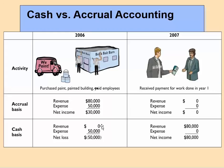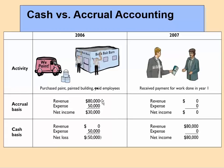Under cash basis accounting, we wouldn't recognize the revenue until we actually got paid, but we would have paid all expenses in 2006 — resulting in a net loss of $50,000 in 2006. Then in 2007, we'd show $80,000 of revenue with no associated expenses. Anyone reviewing the financials would be confused: a $50,000 loss one year, then $80,000 net income the next. It doesn't make sense. With accrual accounting, we match revenues and expenses to when they're earned and incurred, which gives a much more accurate picture.